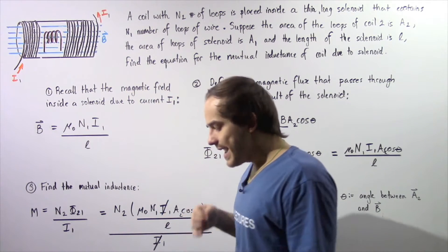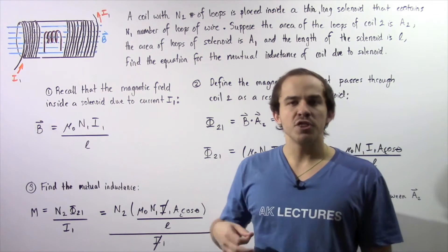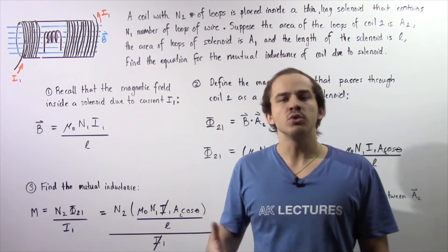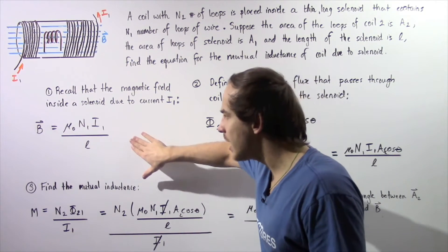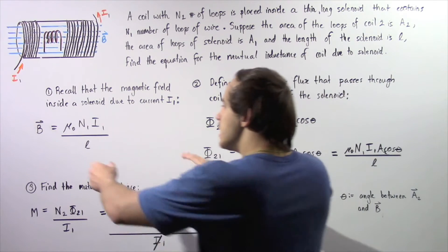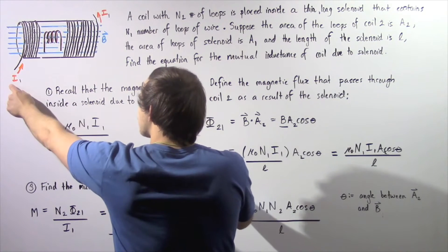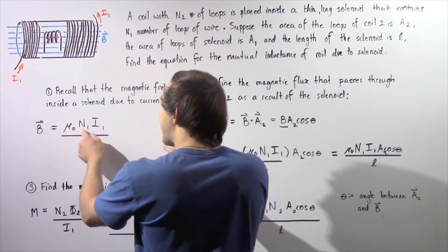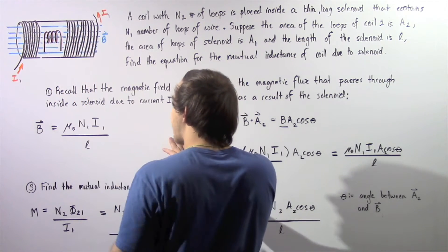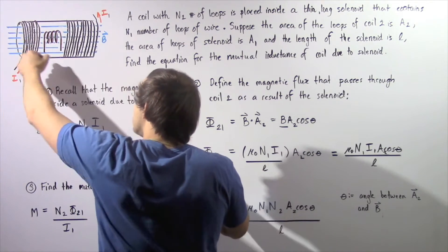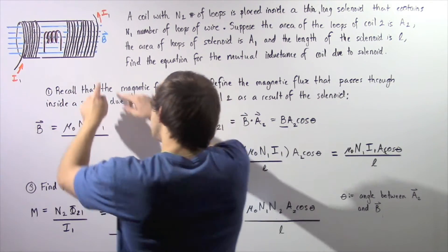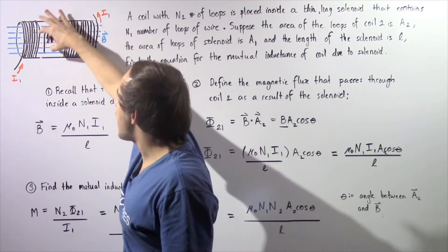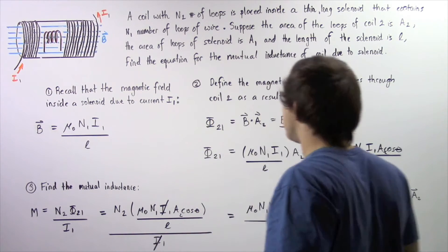Let's begin with step number 1. In step 1, we recall the equation for the magnitude of the magnetic field produced inside the solenoid as a result of the electric current traveling through its wires. This equation was derived in the lecture on solenoids. The magnetic field B produced inside the solenoid as a result of electric current I1 is given by: B = μ₀ · N1 · I1 / L, where μ₀ is the permeability of free space, N1 is the number of loops in the solenoid, I1 is the electric current, and L is the length of the solenoid. Note that in the diagram, the solenoid coils are omitted in one section so that the inner coil number 2 becomes visible.